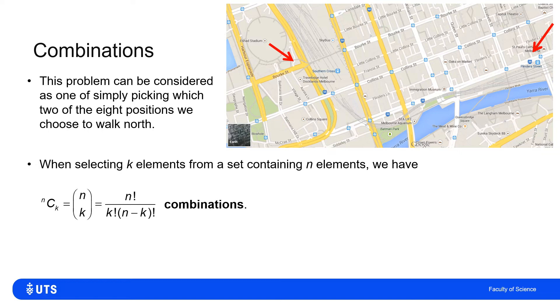So what this also shows as well is that picking two elements from a list of eight is the same as picking six elements from a list of eight. Because where I place the six west or where I place the two north, once I've done that, that locks in the other bit. And you can see that as well from the combination formula there.